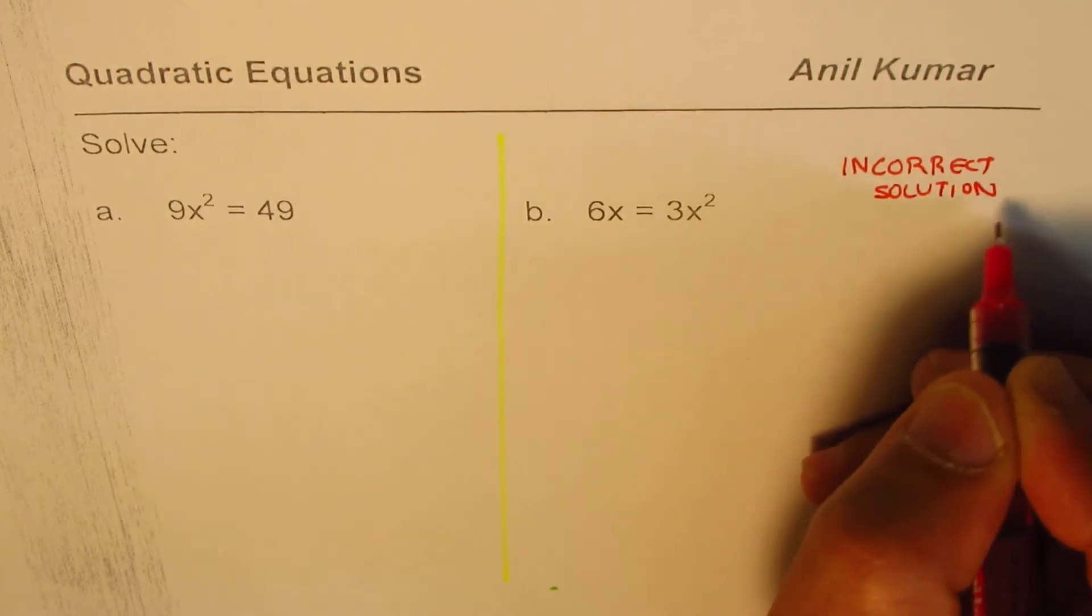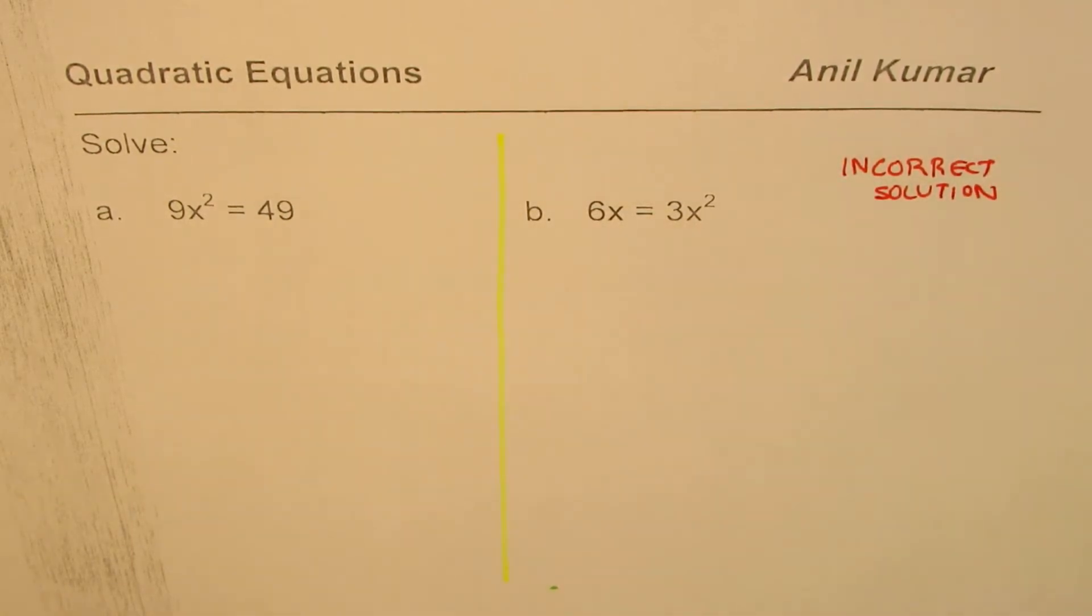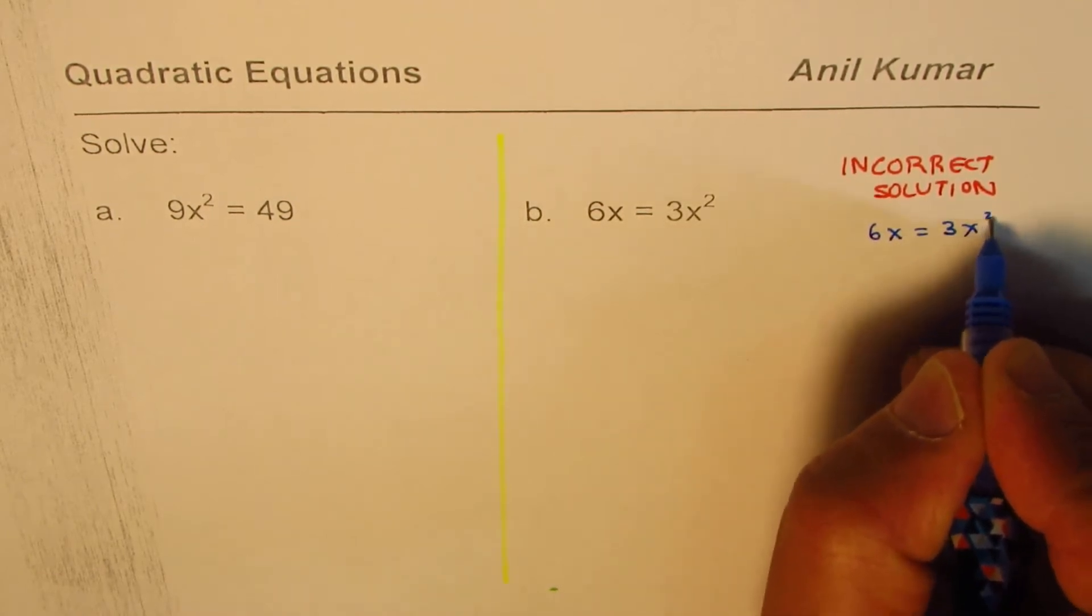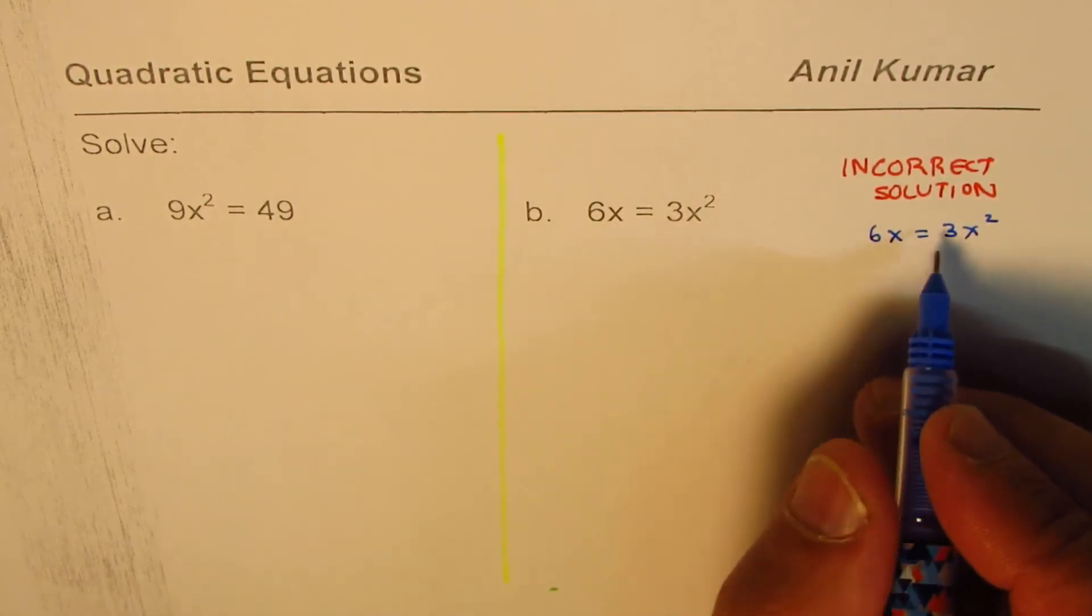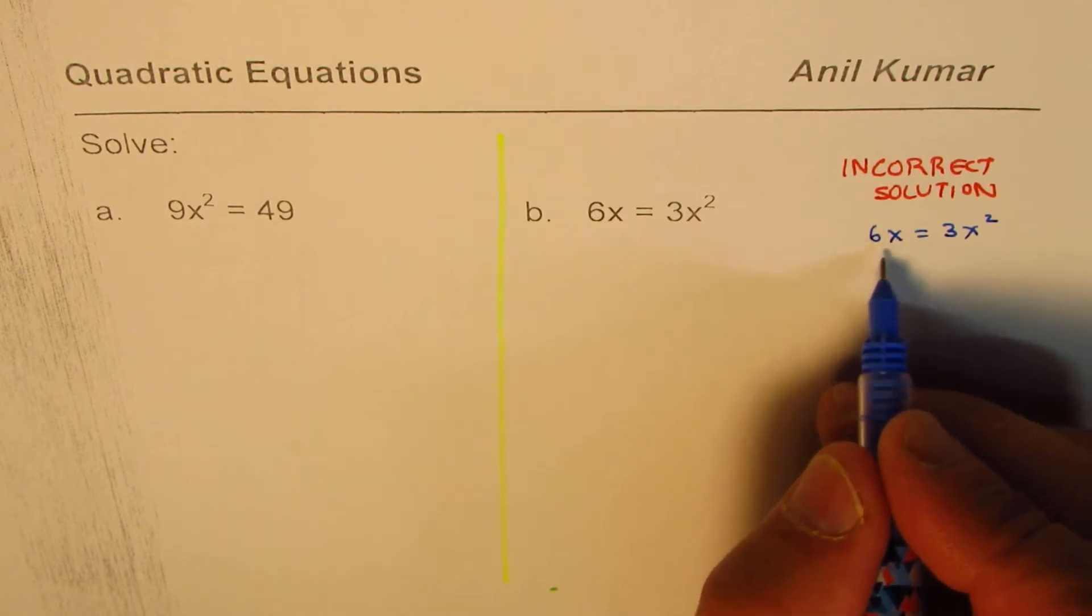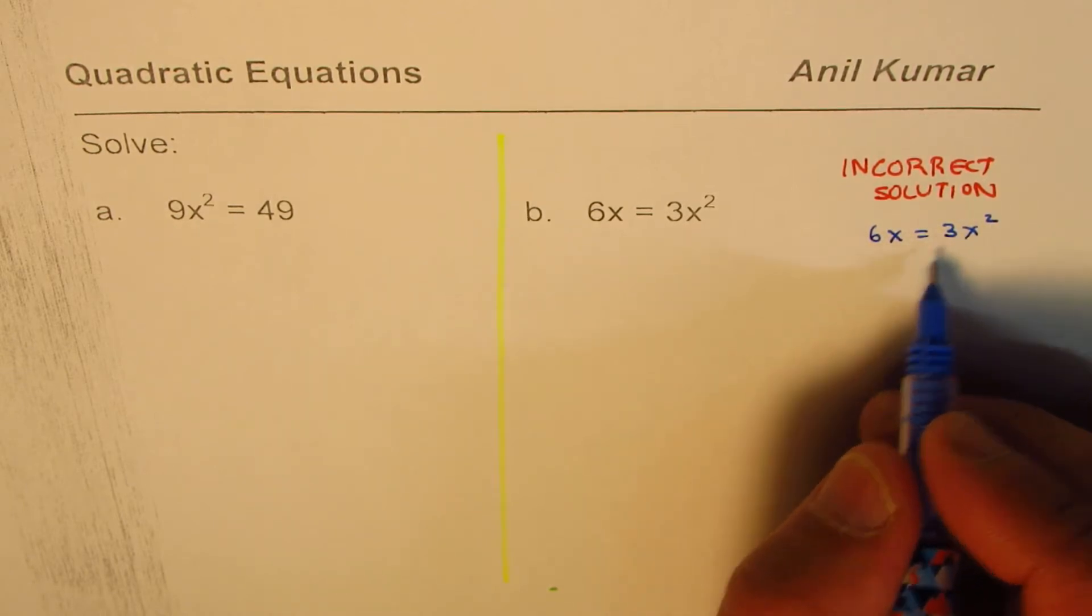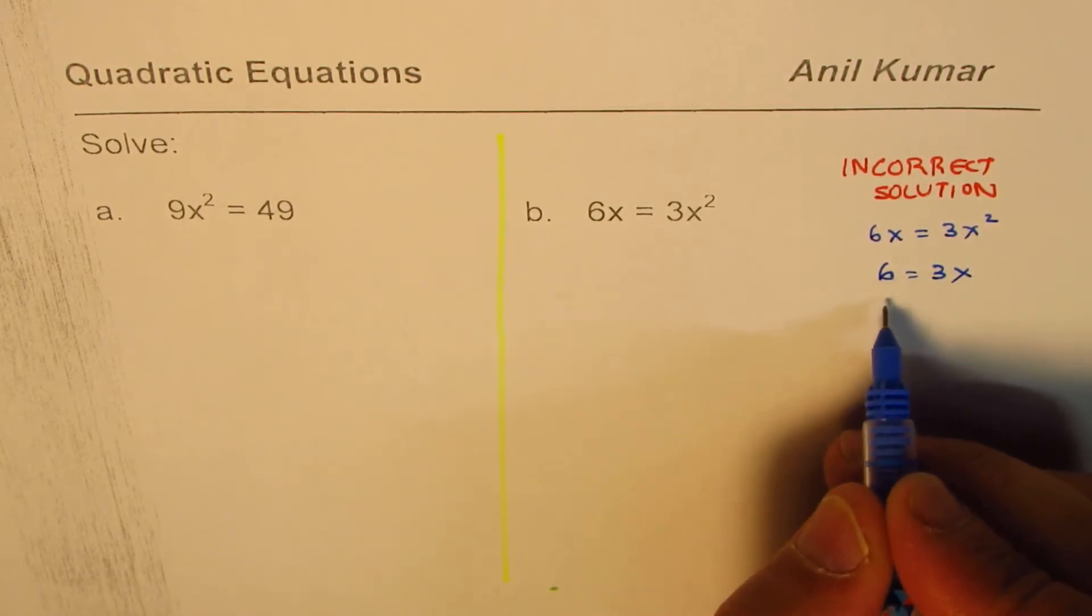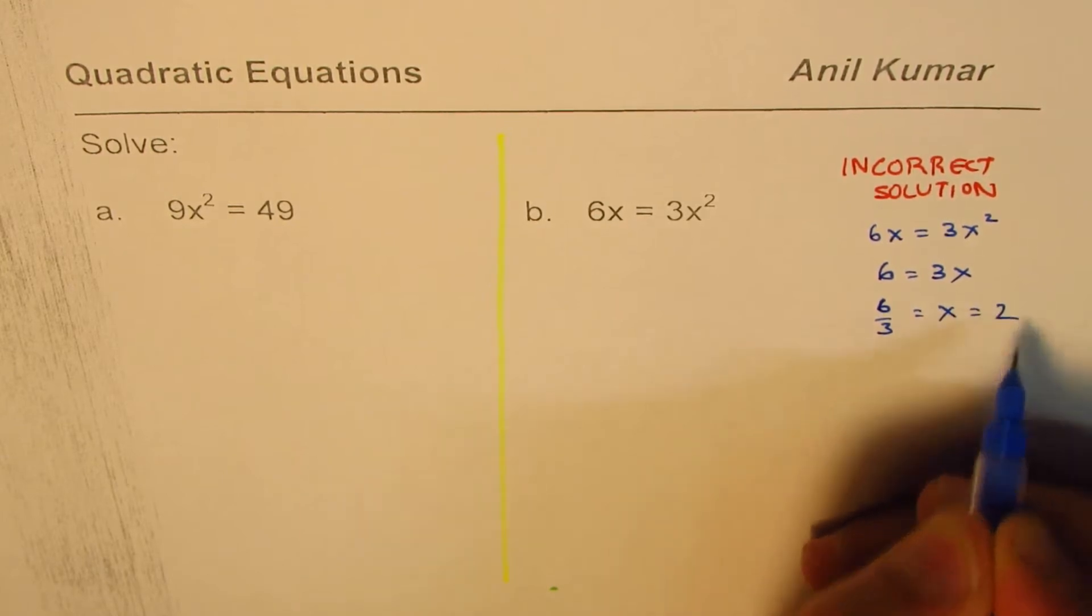So let me first give you the incorrect solution. We are trying to solve for 6x equals to 3x squared. They may cancel x. Let me first cancel the x parts. So we get 6 equals to 3x. Then they may divide 6 by 3. So 6 divided by 3 equals to x which is 2.